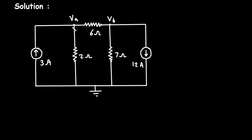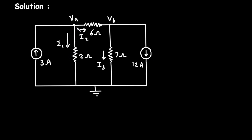Now let's say this current is current I1. We have to assume all the currents towards this reference node. Now let's say this current is current I2, and this current is current I3. Now these two are the current sources. Now let's apply KCL at node VA.